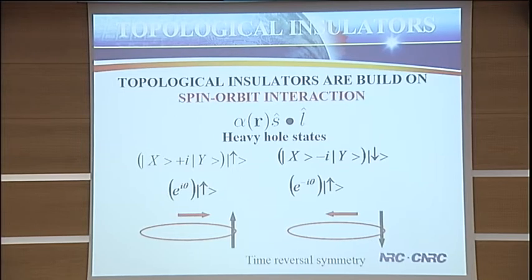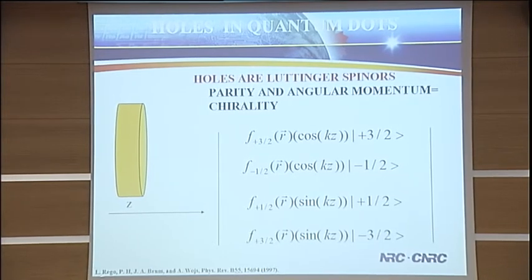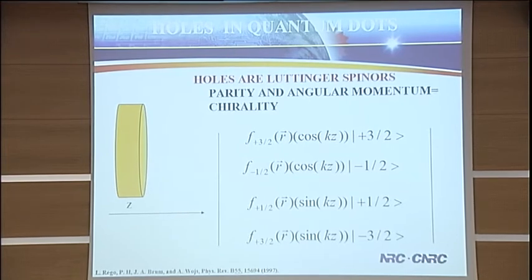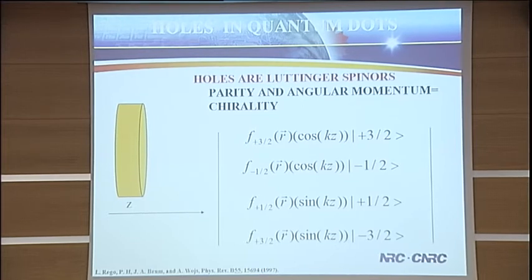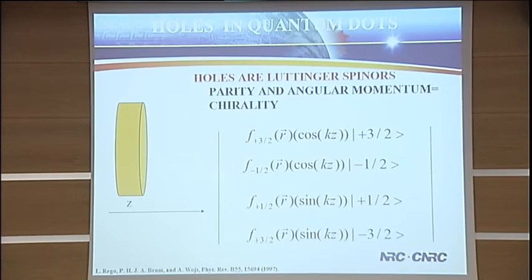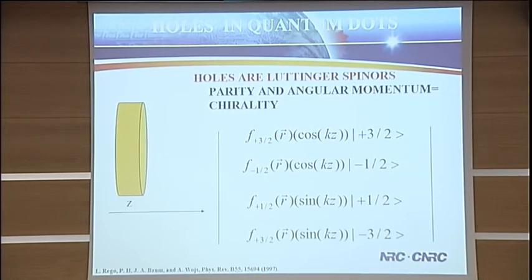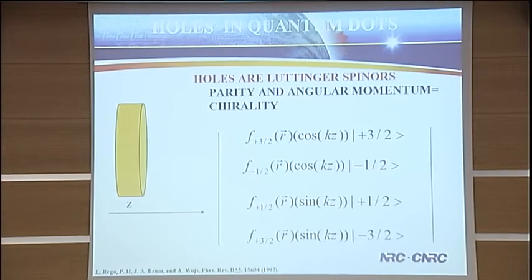Holes are really Luttinger spinors, and there is something called chirality that goes back to Luttinger, which we worked out in 1997. If I have a disk, this Luttinger spinor is characterized by four components from the four-band K·P: +3/2, -1/2, +1/2, and -3/2. The important part — which we call chirality — is the order of the parity of the wave functions. You have to order parity, and then everything else follows total angular momentum: here you would have even, even, odd, odd.